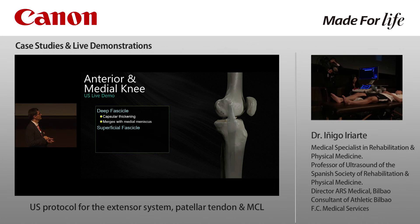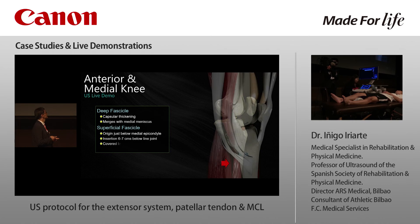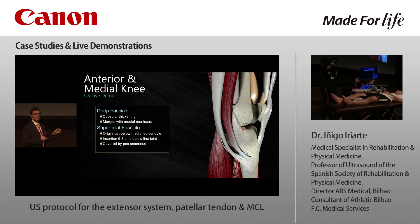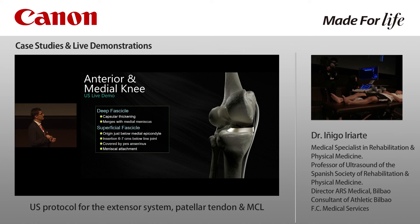Above the deep fascicle we find the superficial fascicle. Its origin is just below the medial epicondyle, and its insertion is six to seven centimeters above the knee joint. The pes anserinus covers the superficial layer of the medial collateral ligament, and is formed by three tendons: the sartorius, the gracilis, and the semitendinosus. The posterior aspect of the superficial component also joins the medial meniscus.